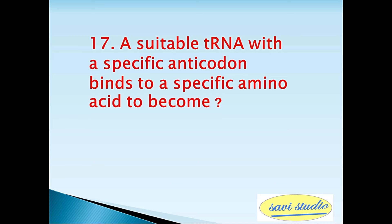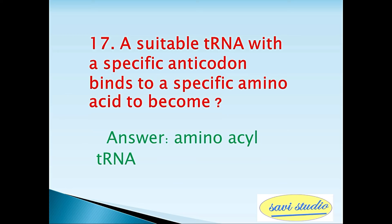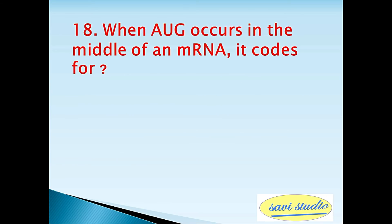Seventeenth question: A suitable tRNA with a specific anticodon binds to a specific amino acid to become — answer: aminoacyl-tRNA. Eighteenth question: When AUG codon occurs in the middle of an mRNA, it codes for — answer: methionine.